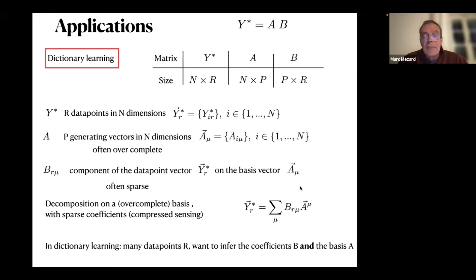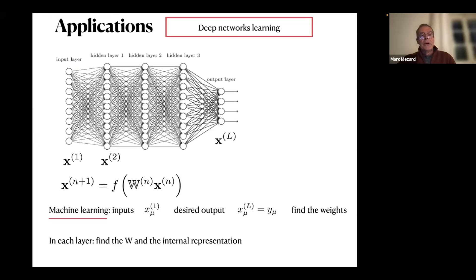Dictionary learning generalizes this problem: now I have many data points — R is large — and I want to infer both the coefficients and the basis. I don't know the basis, but I want to find a good basis in which each data point has a sparse representation.